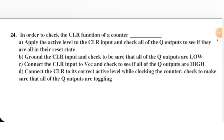Next question: in order to check the clear function of a counter — apply the active level to the clear input and check all Q outputs to see if they are in their reset state (all 0); ground the clear input and check that all Q outputs are low; connect clear to VCC and check if Q outputs are high; connect clear to active level while clocking and check if Q outputs are toggling. Options B, C, D are wrong. A is correct: apply active level, then check flip-flops are at 0 via the Q outputs.